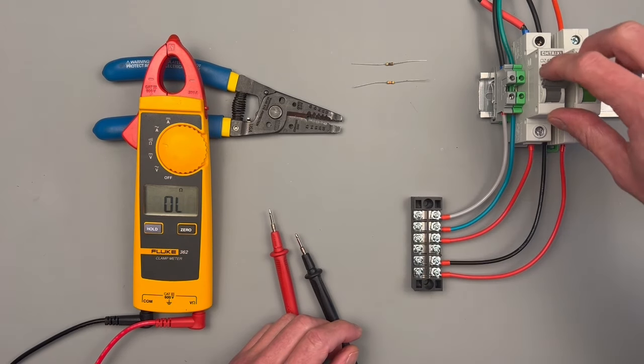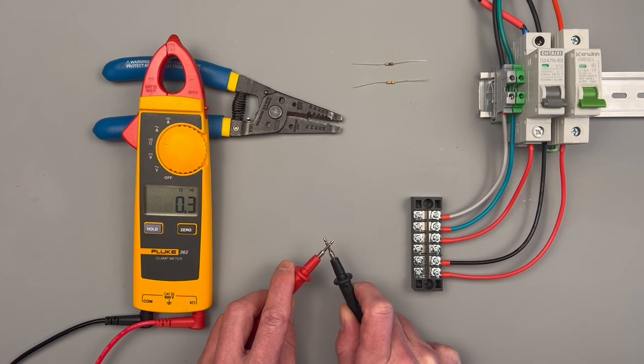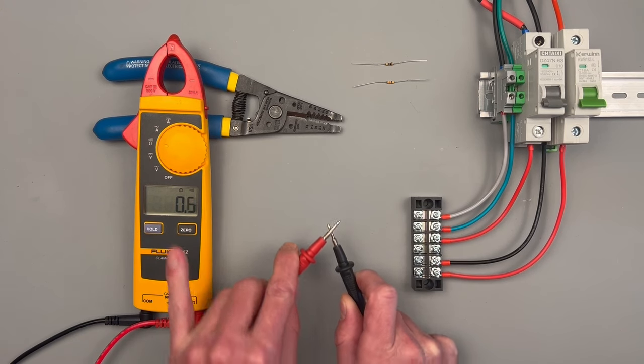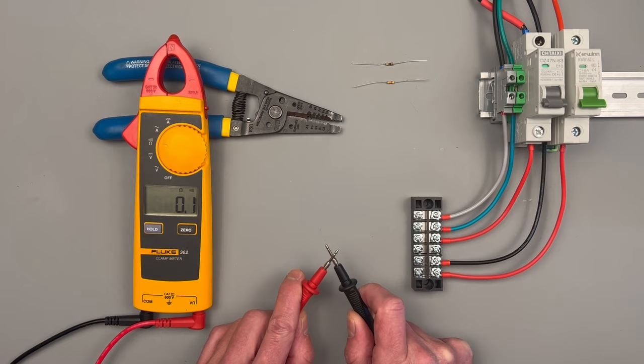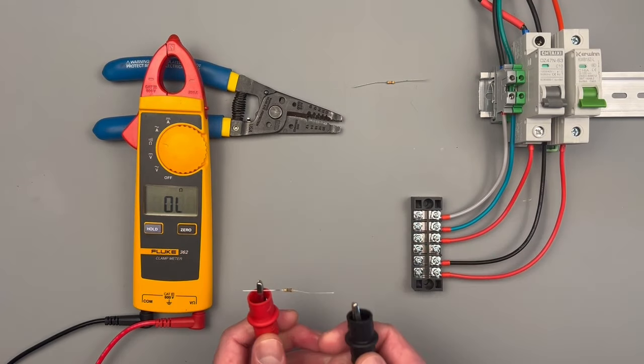Next we have our ohms and continuity readout. So continuity is obviously just going to be our audible tone and you can see our little speaker symbol indicating. Let's go ahead and take some measurements of resistors.